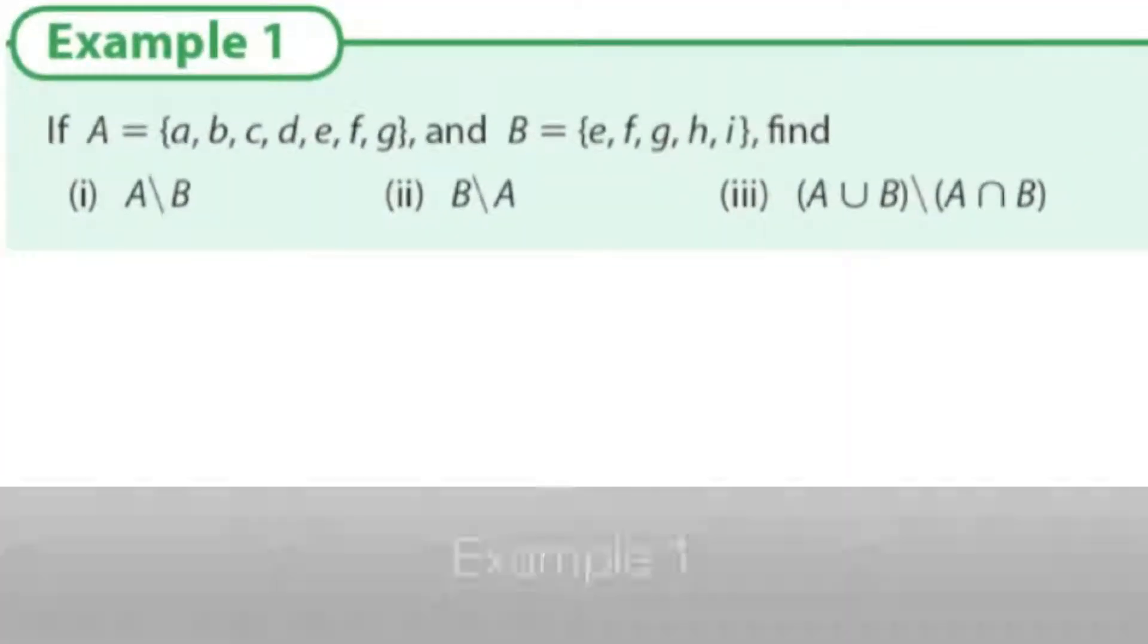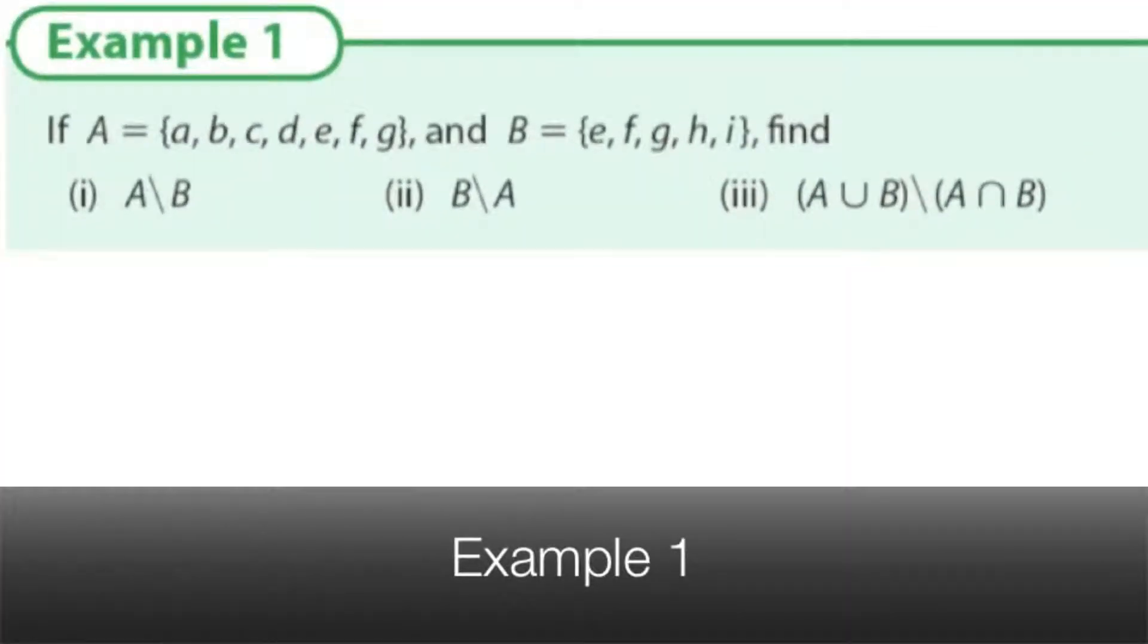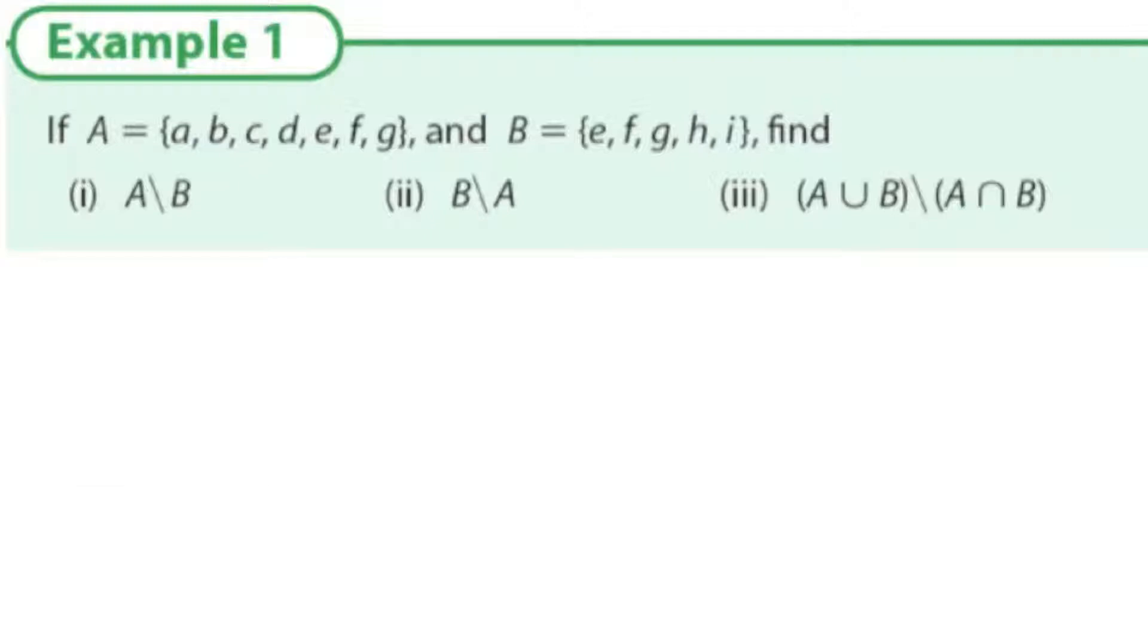Let's look at a question. If A has the elements a, b, c, d, e, f, g and B has the elements e, f, g, h, i, we're to find firstly A not B.